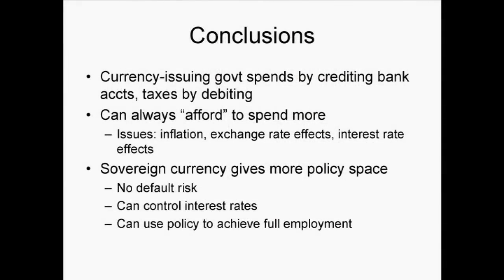Conclusions: A currency-issuing government spends by crediting bank accounts and taxes by debiting them. It can always afford to spend more — there are still issues such as inflation, exchange rate effects, and interest rate effects, but there's no affordability problem. When the president tells you he's run out of money, that is just not true. Sovereign currency gives more policy space: there's no default risk, the government can control its interest rates, and it can use policy to achieve full employment.